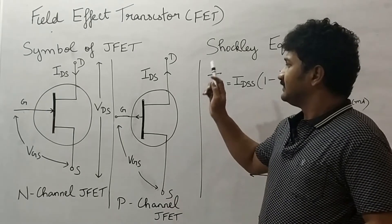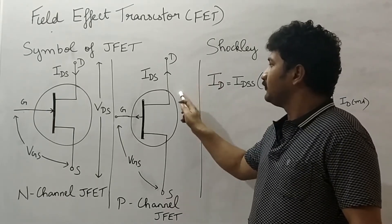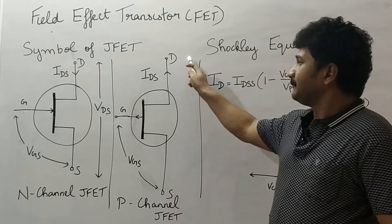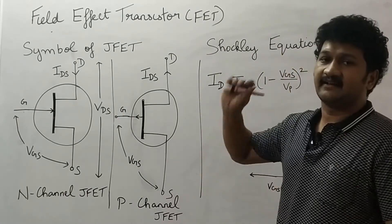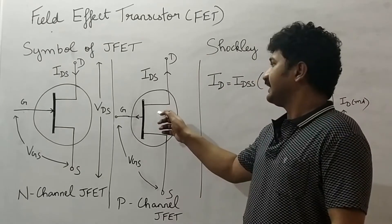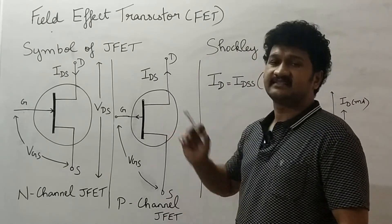The reason for drain to source current moving upwards is: in P channel JFET, the center layer will be P layer, P channel. So when drain to source voltage is applied, when it is reverse biased, holes get attracted towards the negative terminal of drain to source voltage.